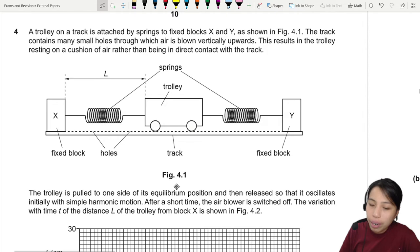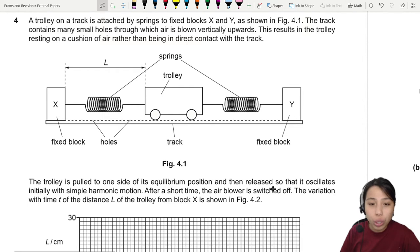The trolley is pulled to one side of equilibrium and released, so this trolley pull either side and it oscillates initially with simple harmonic motion. But after a short time the blower is switched off - no more air cushion under this trolley to make it float.